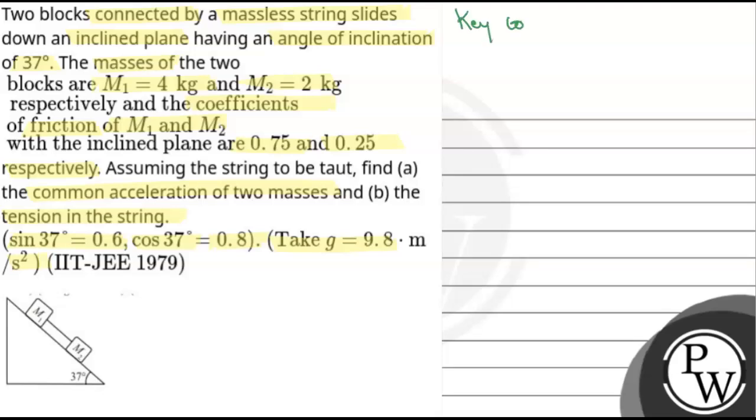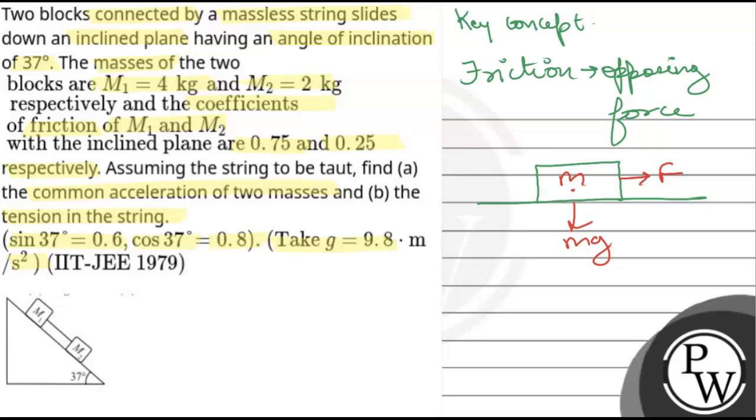The key concept is friction. Friction is basically the opposing force which is applied whenever an object is in contact with a rough surface. Let's say, a block of mass m and pushing force F in this direction. So the friction force to oppose its motion will be in this direction which is f. Friction force f equals mu R.